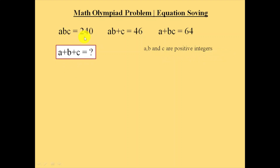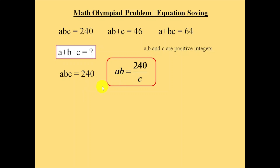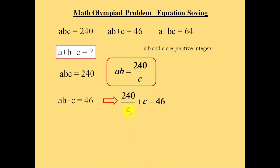First, we will take equation 1: a into b into c is equal to 240, and send c to the right side, giving us a into b is equal to 240 by c. Now take the second equation: ab plus c is equal to 46. In this equation, substitute the value of a into b from here. That will become 240 by c plus c is equal to 46.